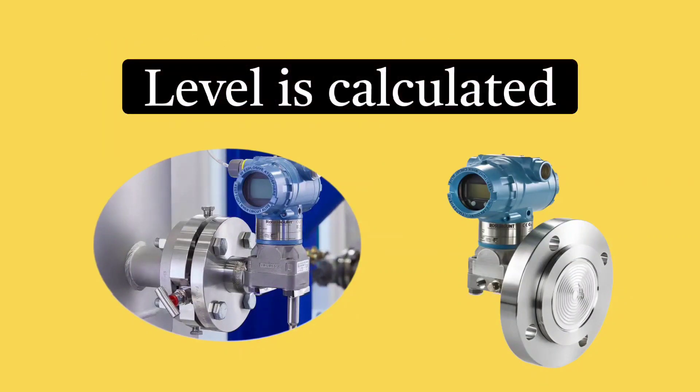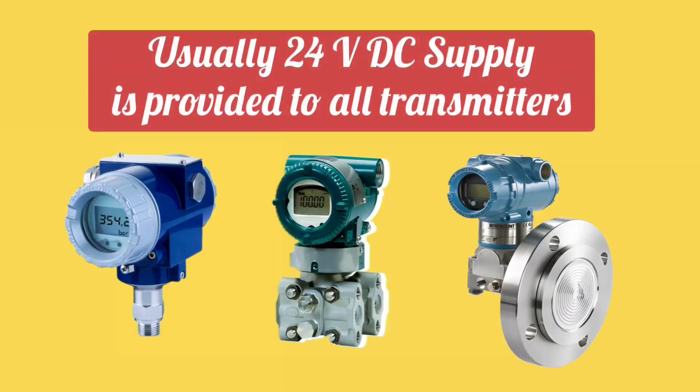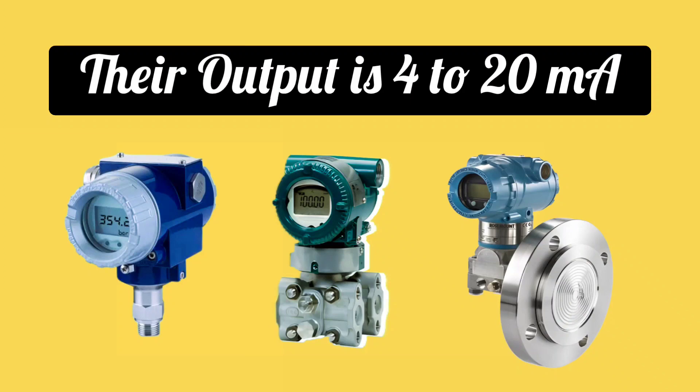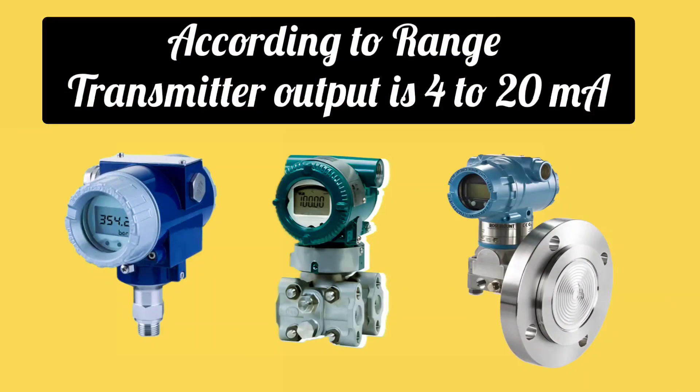Friends, usually 24 volts DC supply is provided to all pressure transmitters. And their output is 4 to 20 milliampere signal. According to the range, these transmitters give 4 to 20 milliampere output.